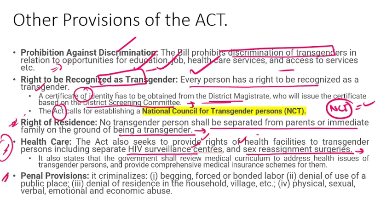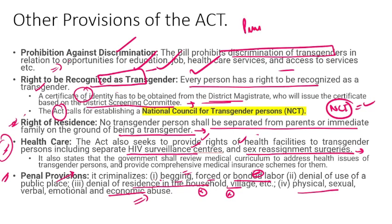Penal provisions — यह criminalize करता है अगर इनसे जबरदस्ती भीक मंगवाई जाए, bonded labor करवाया जाए, public places जैसे buses या water coolers से इन्हें deny किया जाए। इन सभी को offense माना जाता है और punishment मिलेगी। Denial of residence in the household पर भी punish किया जा सकता है। Physical, verbal, emotional, and economical abuse — किसी भी type का abuse करने पर government punish करेगी। यह 2019 का act है।